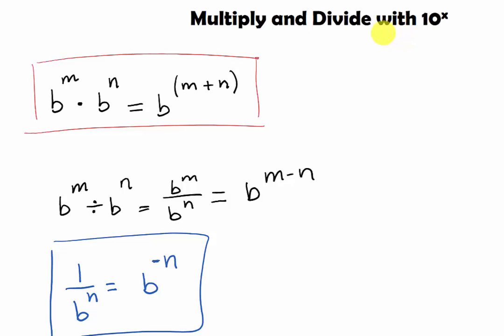Here are the three rules that you need to know. First, when we multiply an exponent with the same base, all you have to do is add the exponent together.